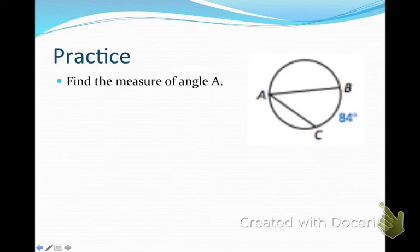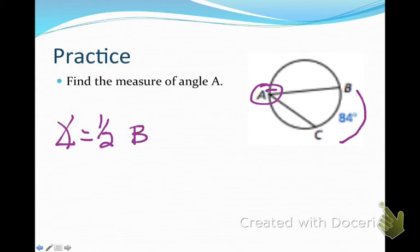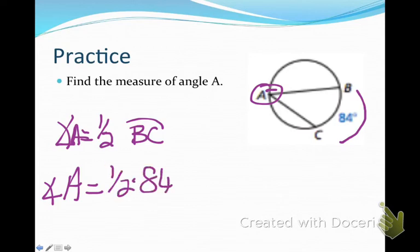All right, find the measure of angle A. Well, remember our theorem said that the measure of an inscribed angle is exactly one-half the intercepted arc measure. Well, the arc that's intercepted here is BC by angle A. So angle A is one-half of BC. And BC is 84. So angle A equals one-half of 84, which is 42 degrees.